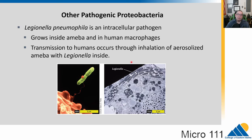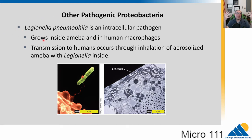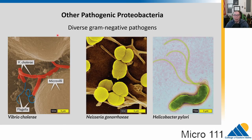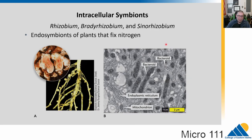There are some other interesting pathogens in the proteobacteria. Legionella pneumophila is interesting because it grows inside amoeba and also inside human macrophage cells — white blood cells. It can be transmitted through air conditioners and likes warm water. Legionella was named after it was first discovered in the 1970s at a conference of American legionnaires at a hotel where Legionella pneumophila was growing in the AC system; many got infected and some died. There's also diversity with Vibrio cholerae, Neisseria gonorrhea, Helicobacter pylori as common pathogens, and important symbiotic bacteria like Rhizobium, which fixes nitrogen for plants such as peas and legumes — they live with the plant rather than causing disease.